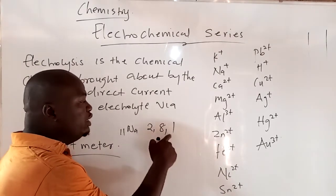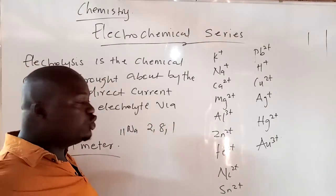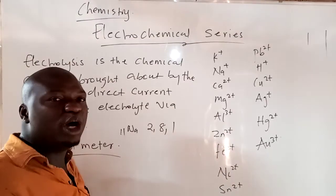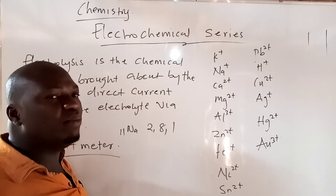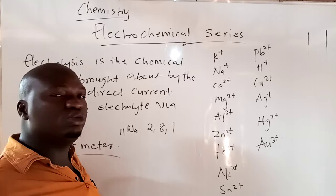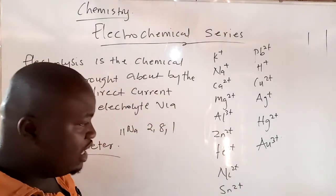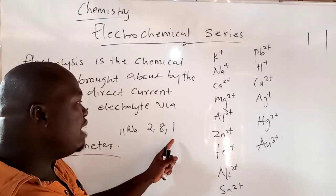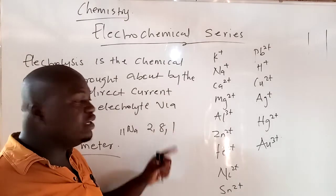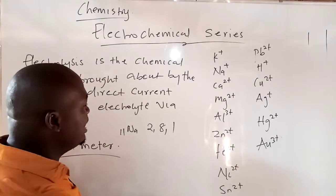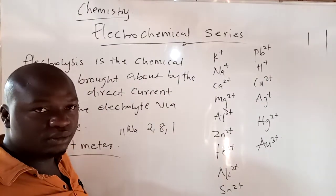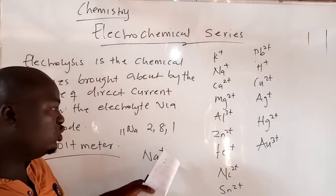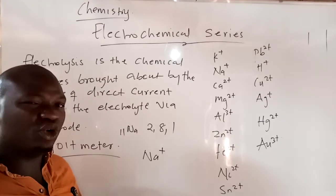For sodium to be stable, it needs to lose one electron, or it needs to gain seven more electrons to make the outer shell eight. I normally ask my students: is it easier to give someone one naira or seven naira? Of course it is easier to give someone one naira. No element is going to give sodium the seven electrons it needs, so sodium has to lose the one electron. That is why we write sodium as Na⁺, meaning it lost one electron.